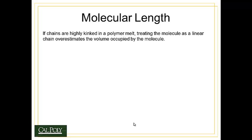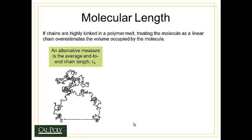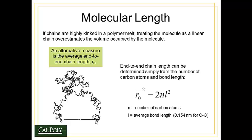If chains are highly kinked in a polymer melt and we pretend the polymer is linear, we overestimate the volume occupied by the molecule. Knowing the volume of the molecule is important to its properties, especially in the melt state. So there's an alternative way to measure polymer dimensions called the end-to-end chain length, or R₀. If we identify both ends of the polymer, the distance between those two ends defines the average volume taken up by the polymer — more accurate than assuming a straight chain. We can estimate R₀ as: ⟨R₀²⟩ = 2N·L², where L, the carbon-carbon bond length, is 0.154 nanometers.